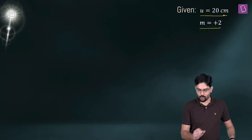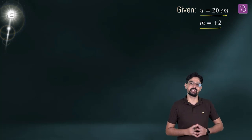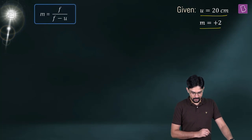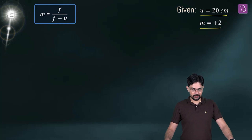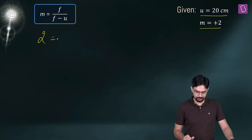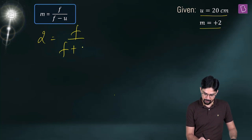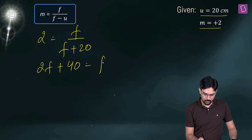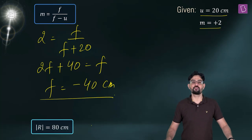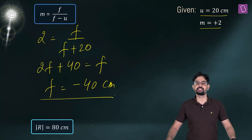The distance of the object from the pole of the mirror is 20 cm, which with sign is minus 20 cm. Using the formula M = f / (f − U), we put m = 2 and get: 2 = f / (f − (−20)) = f / (f + 20). Simplifying, 2f + 40 = f, so f comes out to be minus 40 cm, where the negative sign confirms the mirror is concave. The magnitude of the radius of curvature is twice the focal length, that is 80 cm.